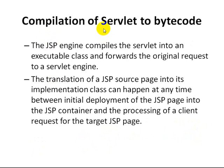Stage 2 is compilation of servlet to bytecode. The JSP engine compiles the servlet into an executable class and forwards the original request to the servlet engine. The translation of the JSP source page into its implementation class can happen at any time between the initial deployment of the JSP page into the JSP container and the first client request for that JSP page. The first two stages are completed at the time of deployment or the first request by the user.